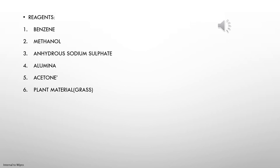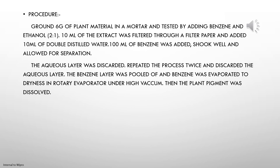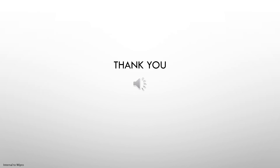In this method, we are separating plant pigments, so plant material is used. The plant material is weighed accurately, crushed using a mortar and pestle, and benzene and ethanol are added in the ratio of 2:1. These are the procedures for the column chromatography separation technique. Thank you everyone.